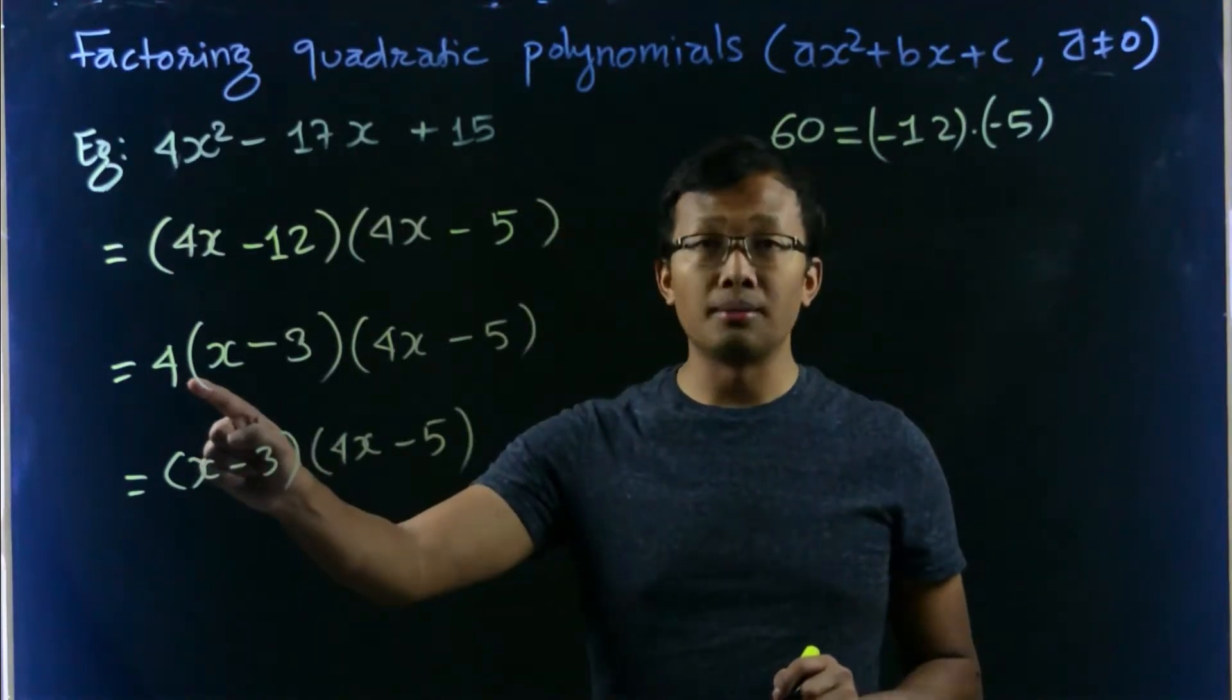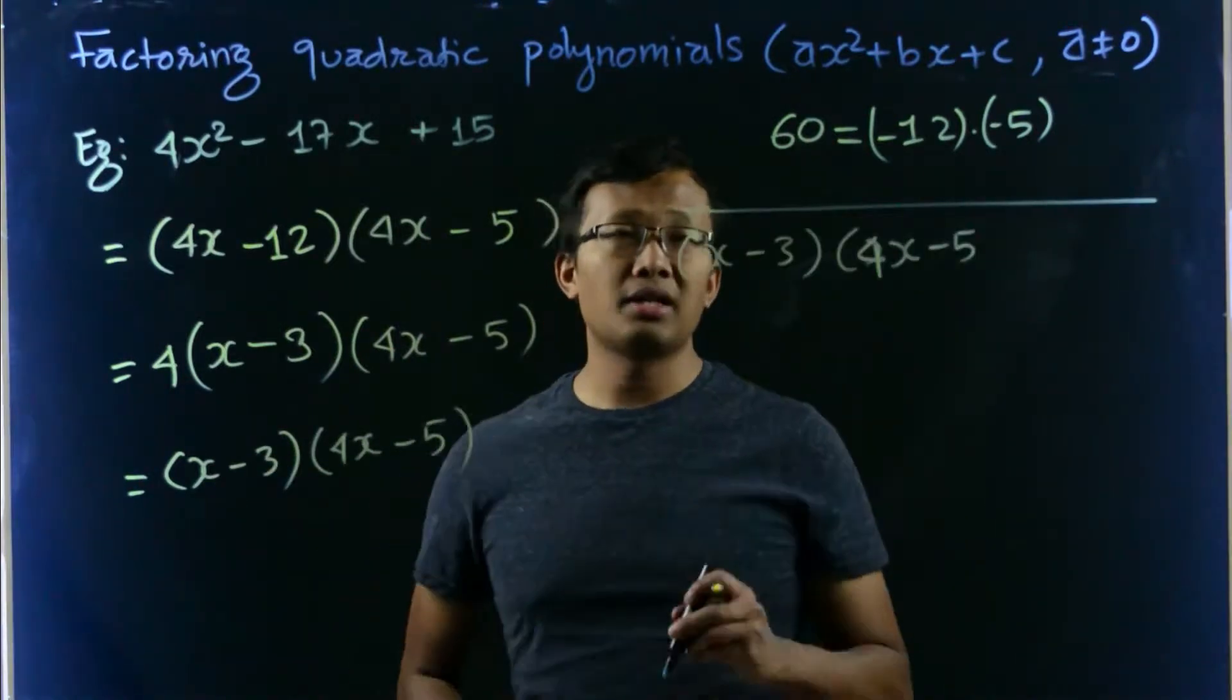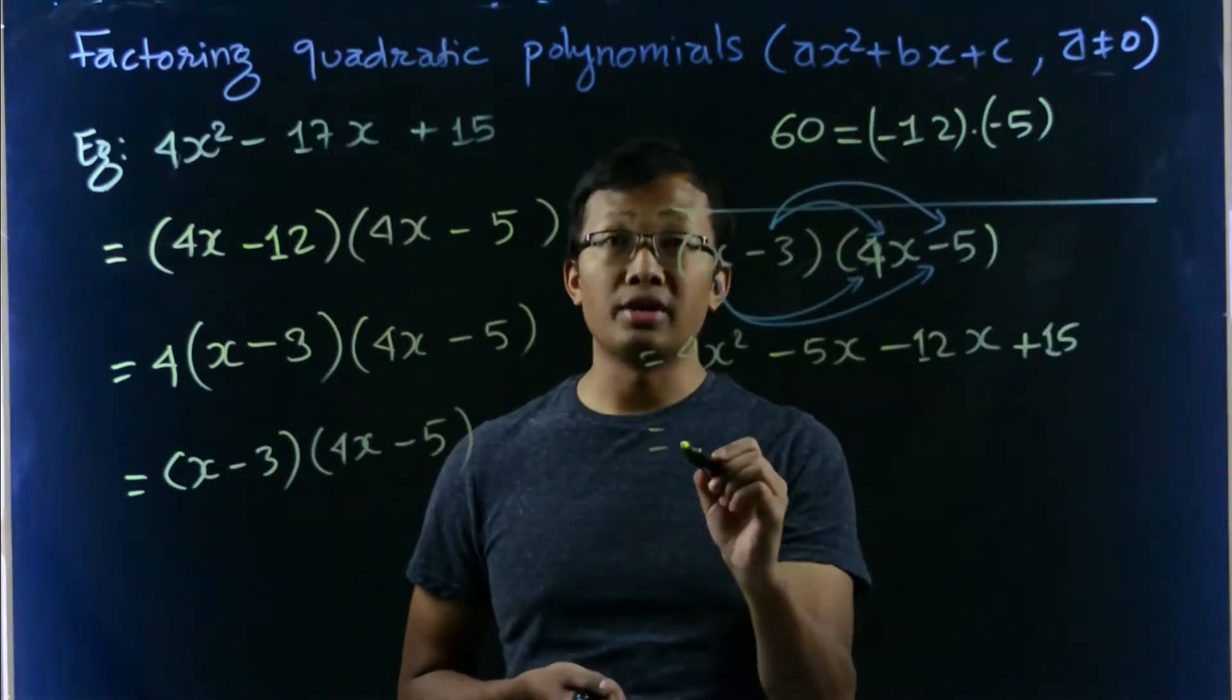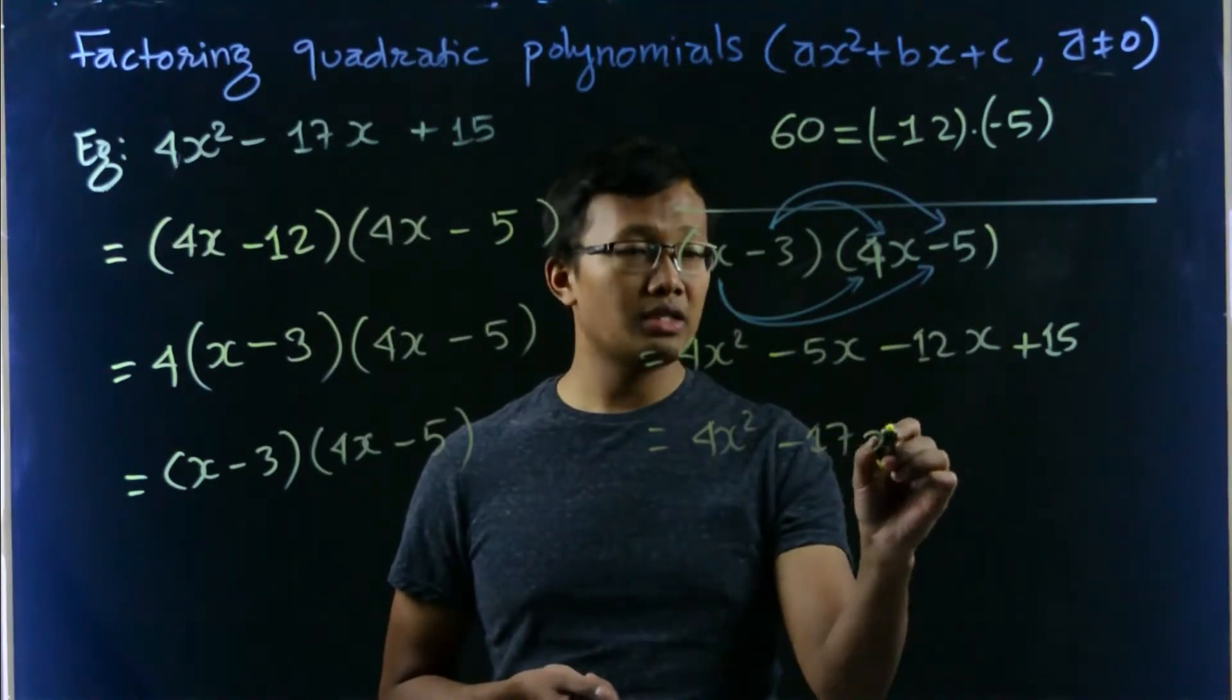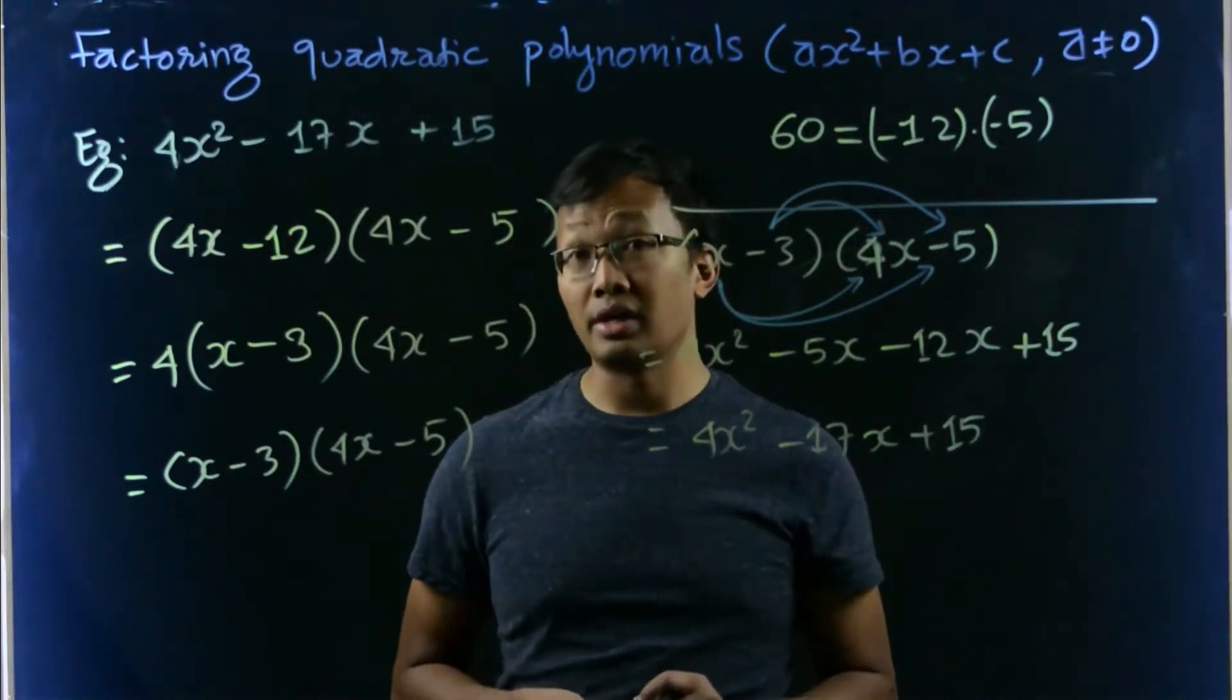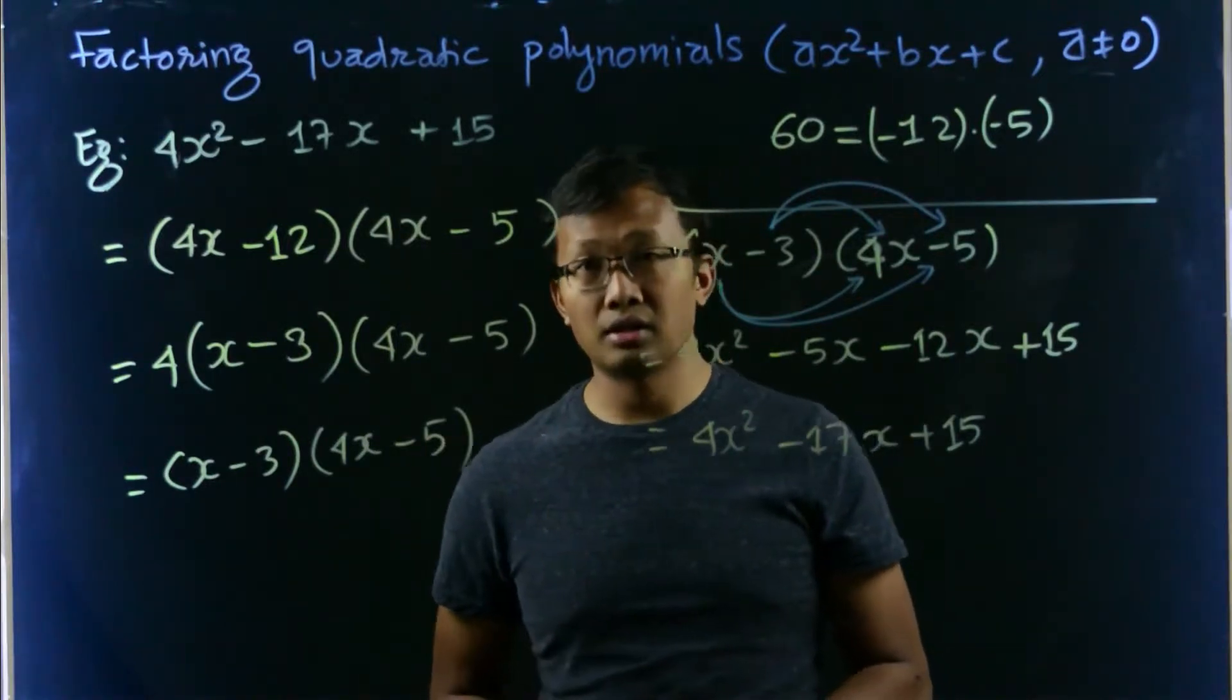Now the correct factors for the quadratic polynomials are simply x minus 3 and 4x minus 5. We ignore the common quantity. Now let us check whether these factors are correct or not. x minus 3 times 4x minus 5. So thus we have 4x squared minus 17x plus 15. Thus we get the original quadratic polynomial, so our factors x minus 3 and 4x minus 5 are correct.